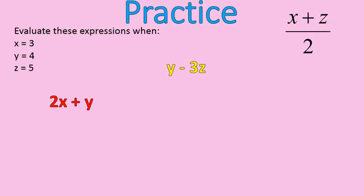Now we're going to practice. You have three expressions on the board: 2x plus y, y minus 3z, and x plus z divided by 2. I've created these expressions for you — there's no word problem here. Solve these three expressions given that x equals 3, y equals 4, and z equals 5. Go ahead and pause the recording, try to solve all three, and then come back for the full explanations.